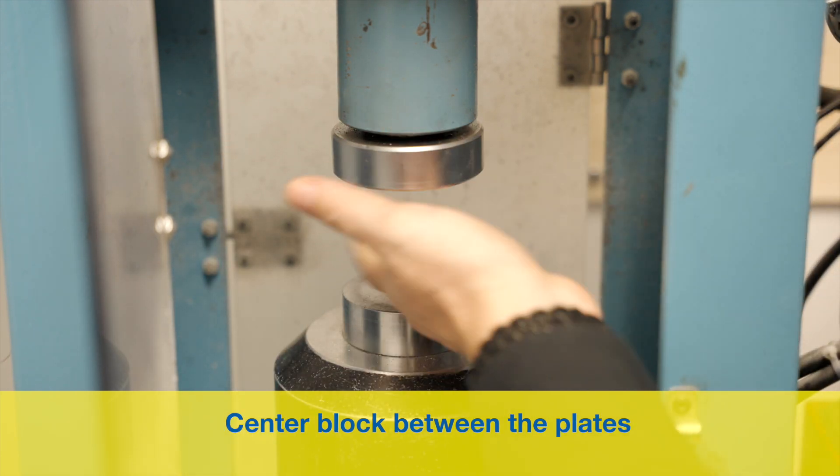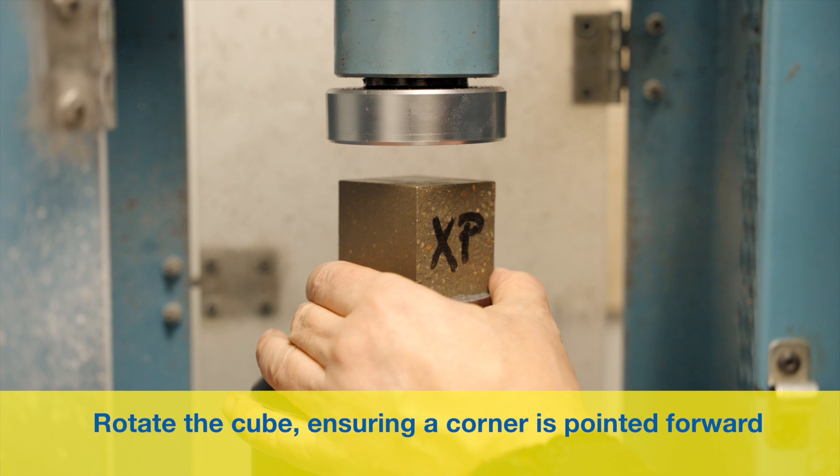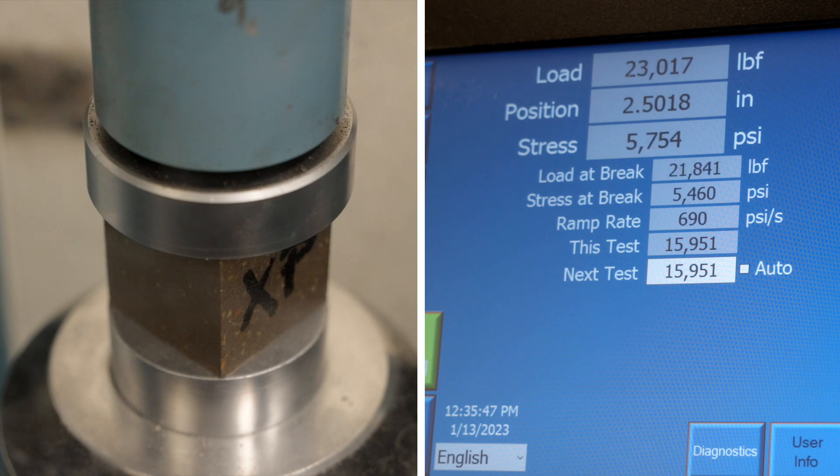Then set the cube between the load blocks by centering it between the plates and rotating it 90 degrees, ensuring a corner is pointed forward. It is now critically important to assess whether the test machine set to run at load rate 2 when unloaded will continue to run at the same rate when loaded with the sample.